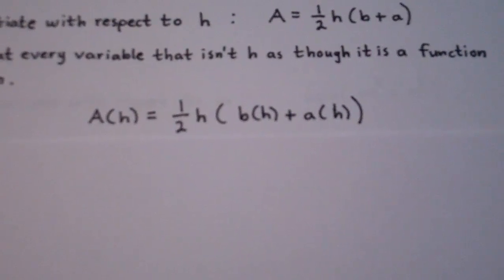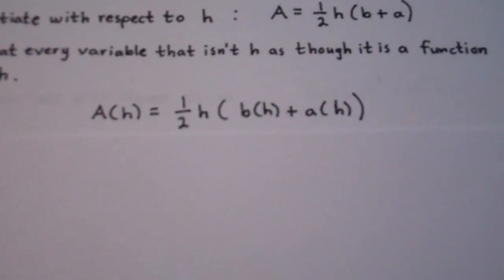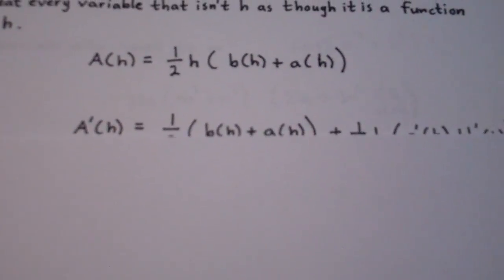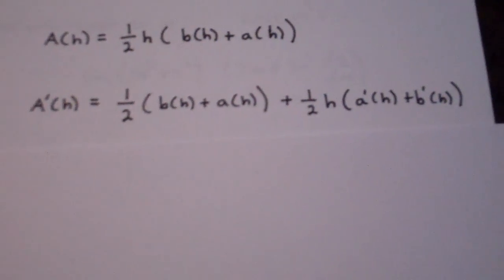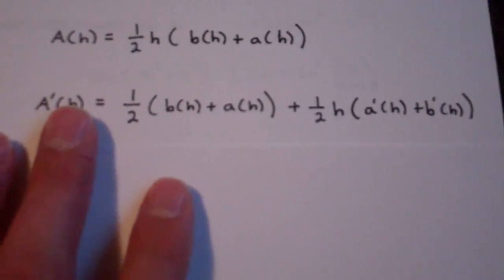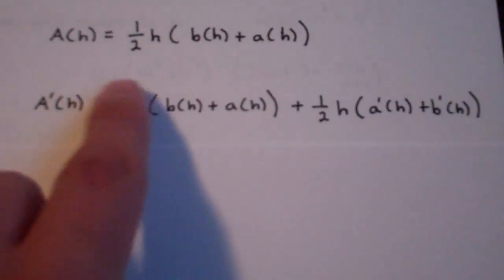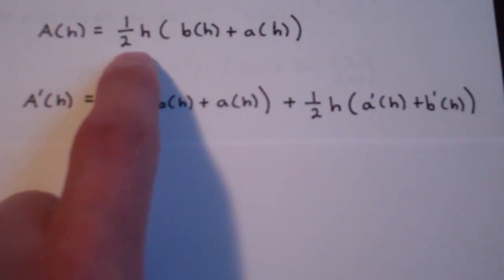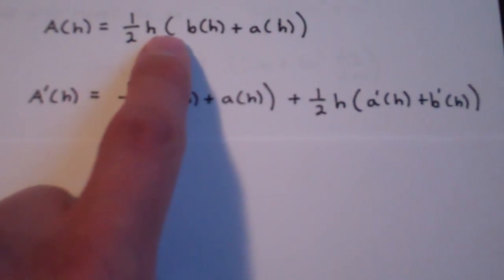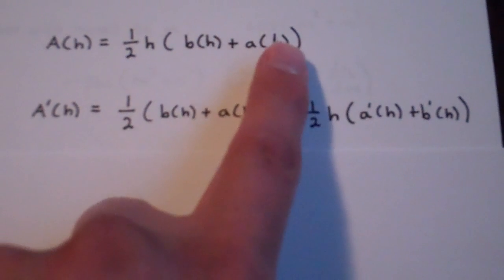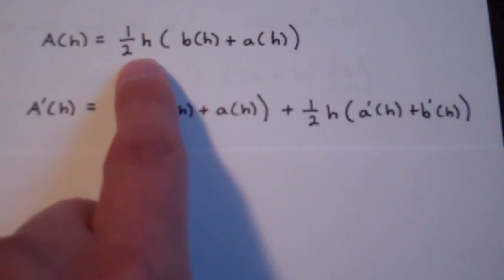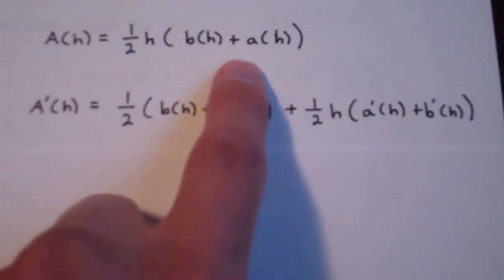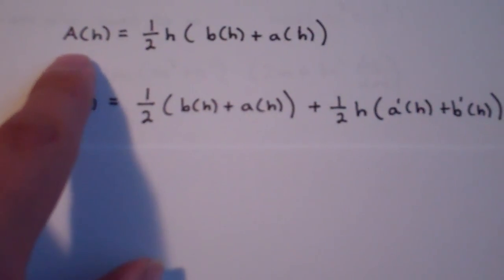At this point, we just take the derivative the way we normally would. Notice you're going to have to use the product rule, because we have one-half h times (b of h plus a of h). So one-half h is the first function, and b of h plus a of h is the second function.